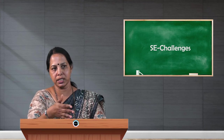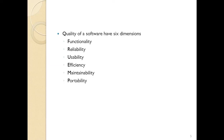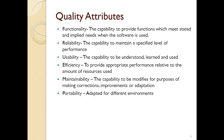There are several factors that decide the quality of software: functionality, reliability, usability, efficiency, maintainability, and portability — these are the six dimensions that measure software quality. Functionality means the capability to provide functions which meet stated and implied needs. Reliability means the capability to maintain a specified level of performance. Usability supports the capability to be understood, learned, and used. Efficiency is providing appropriate performance relative to the amount of resources used.